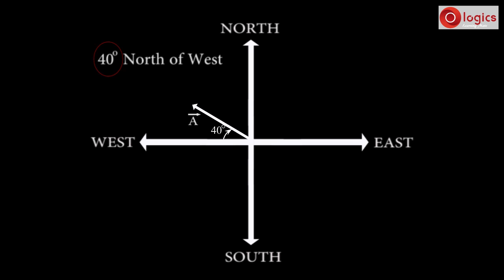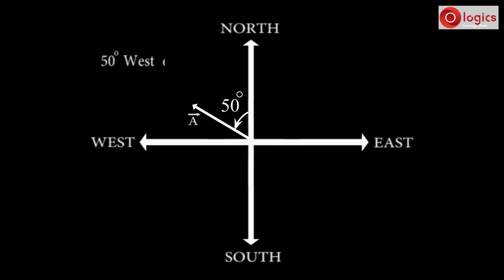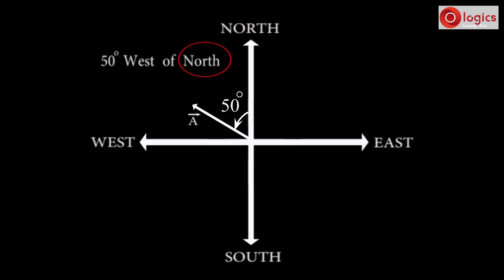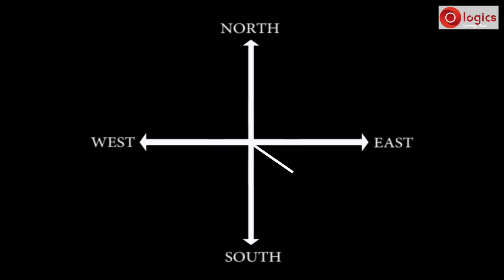This is the angle — it is towards north, and it is measured from west. Now let us draw a vector from north to west direction. Let's say the angle is 50 degrees. The standard notation is 50 degrees west of north — the angle is towards west, measured from north. Similarly, see this vector. Let's say the angle is 65 degrees. The vector direction is 65 degrees east of south — it is towards east, measured from south.